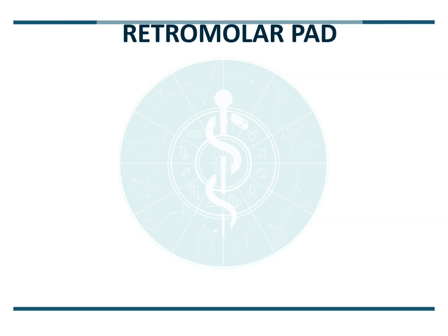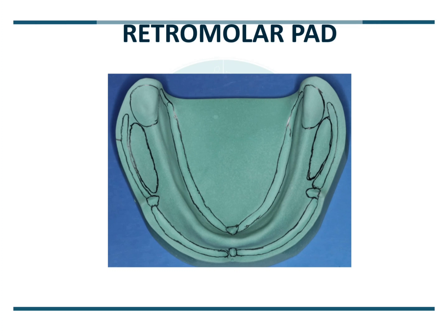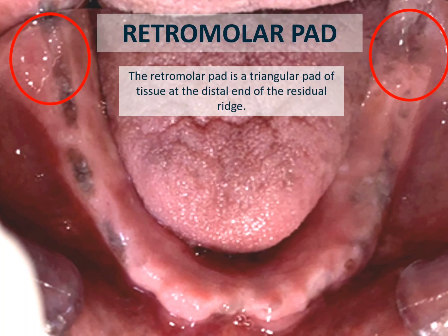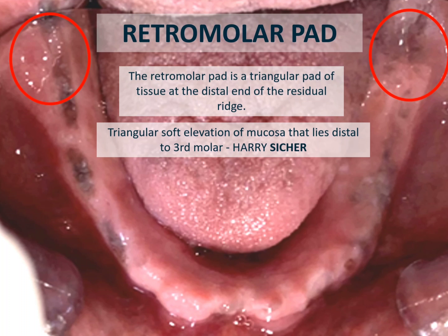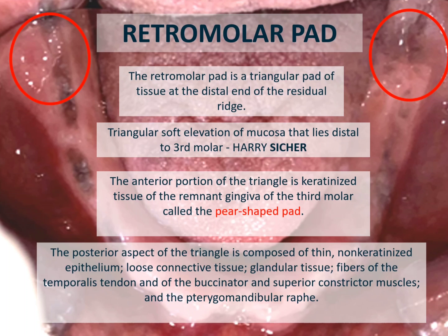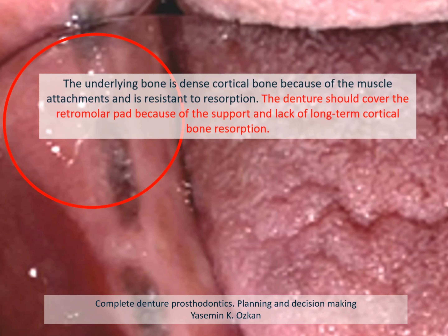Next we will talk about the retromolar pads, which are the secondary stress-bearing areas. The retromolar pad is a triangular pad of tissue at the distal end of the residual ridge. Harry Sicher describes it as a triangular soft elevation of mucosa that lies distal to the third molar, also termed as the pear-shaped pad. The anterior portion of this triangle is made up of keratinized tissue that is remnant gingiva of the third molar. The posterior aspect is composed of thin non-keratinized epithelium, loose connective tissue, glandular tissue, fibers of the temporalis tendon, buccinator and superior constrictor muscles, and the pterygomandibular raphe. The underlying bone is dense cortical because of muscular attachments and is resistant to resorption.